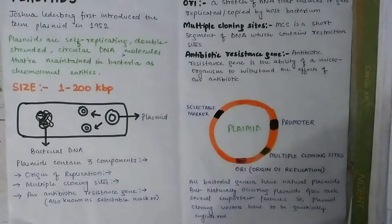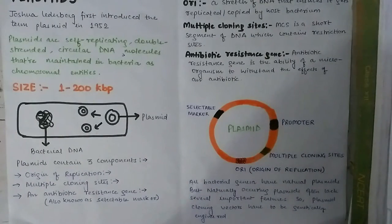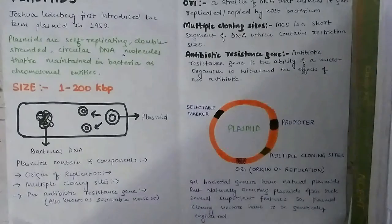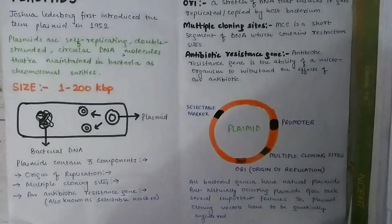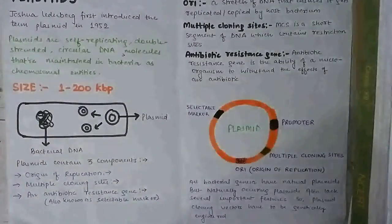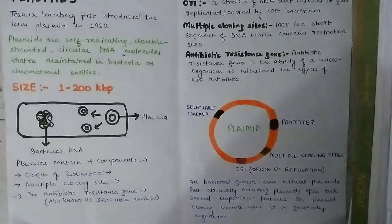Before studying the types of plasmids, it's important to know that naturally occurring plasmids lack several important features. Therefore, genetically engineered plasmids — also called plasmid cloning vectors or genetically engineered vectors — are used in molecular biology.